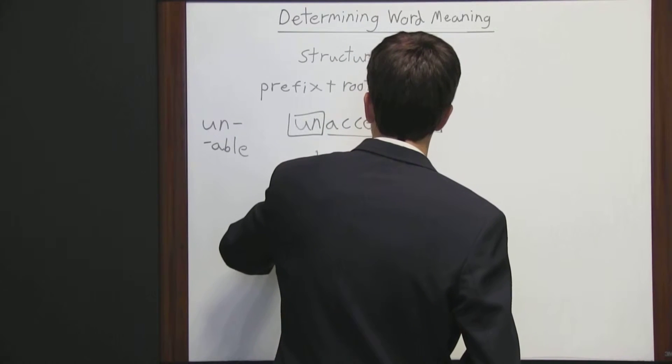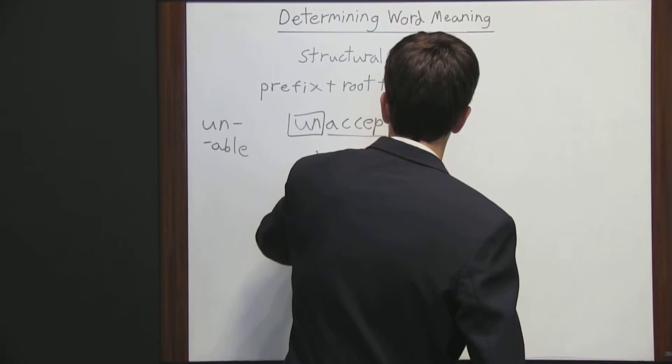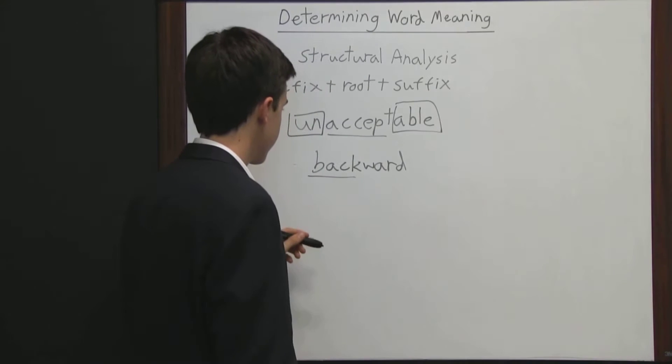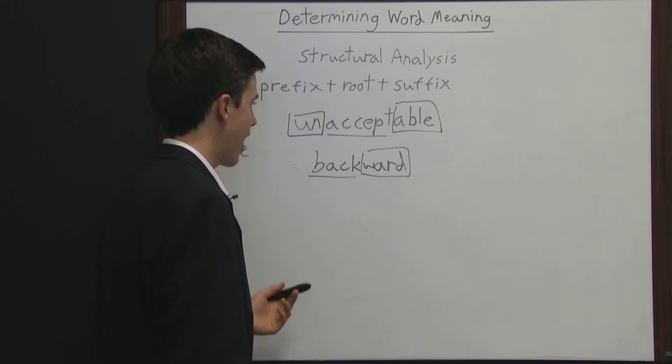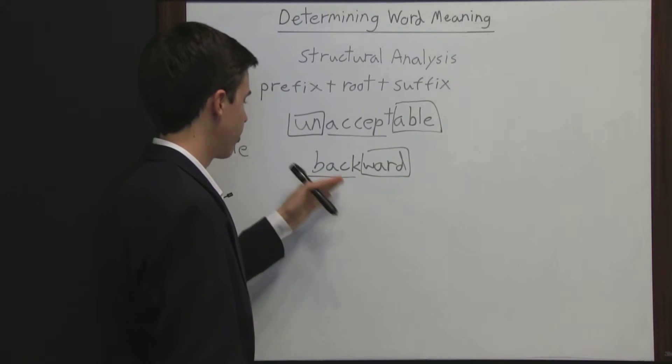Now some words like backward don't have both a prefix and a suffix. They just have a suffix. So back is the root word, and ward is the suffix. So say you didn't know what backward meant, but you knew what the root word meant. You know what back meant.